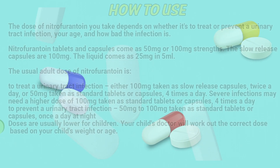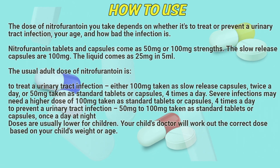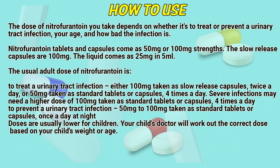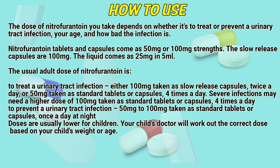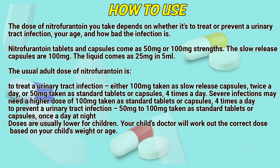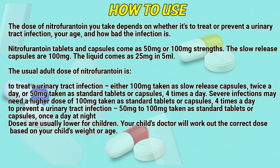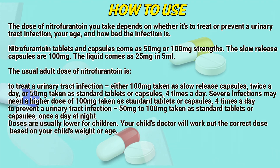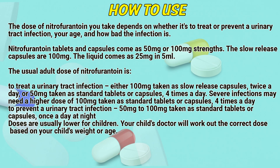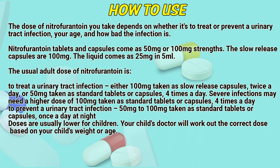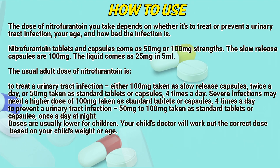How to use: The dose of nitrofurantoin you take depends on whether it is to treat or prevent a urinary tract infection, your age, and how bad the infection is. Nitrofurantoin tablets and capsules come as 15 mg or 100 mg strength. The slow-release capsules are 100 mg.